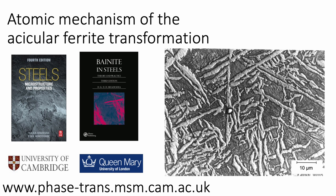This talk is quite short, but there is much more information in the books illustrated here — 'Bainite in Steels' and also 'Steels'. This one you can download freely from my website. Very simply, acicular ferrite involves the formation of ferrite plates on many equivalent planes, rather than as parallel sets of plates.